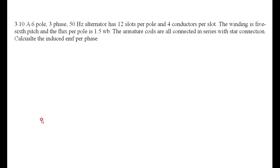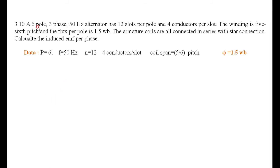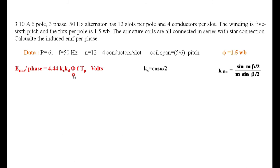The second numerical: a six-pole three-phase alternator has 12 slots per pole and 4 conductors per slot. The winding is 5/6 pitch and the flux per pole is 1.5 Wb. All armature points are connected in series with star connection. Calculate the EMF induced per phase. The same set of equations is used; list out the given data and calculate Kc and Kd.